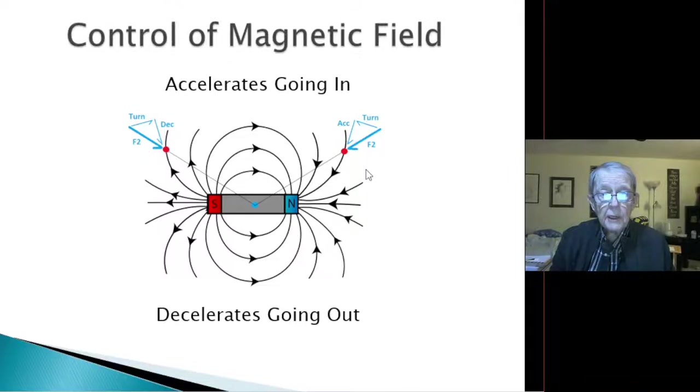What's interesting is to show, take that force and put it in two supporting vectors. This line is in the same direction it's going. This line is in the direction of causing it to turn. And the opposite is true here. So it accelerates going in, and it decelerates going out, because this is an opposing force.